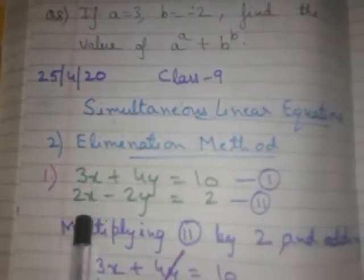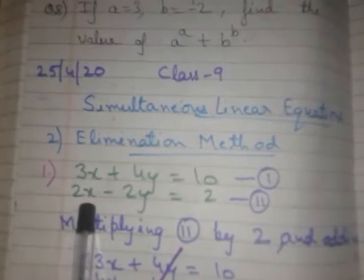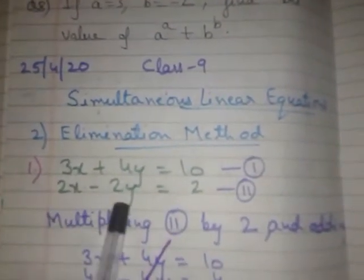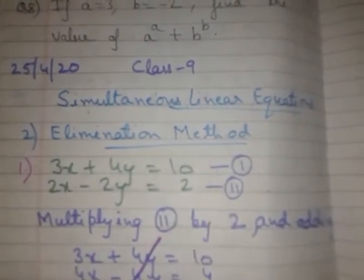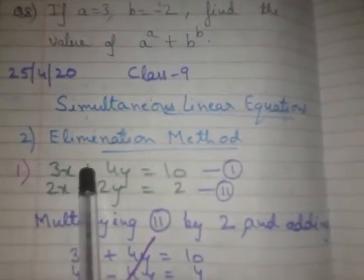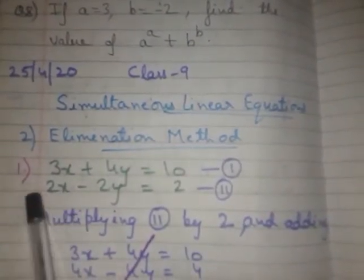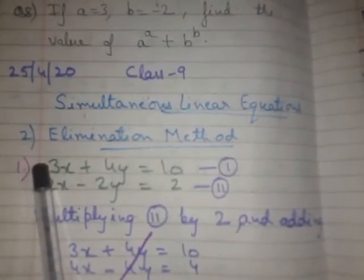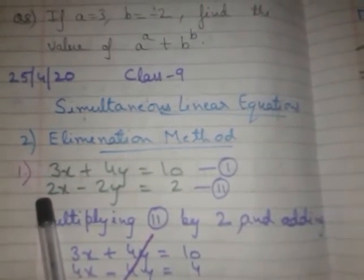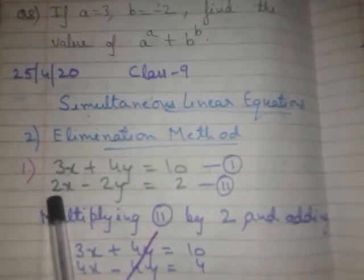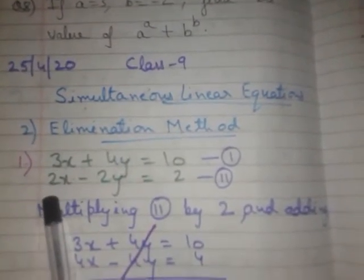Suppose our equations are these two: 3x plus 4y is equal to 10, and 2x minus 2y is equal to 2. Now, we can see here that if we want to eliminate x, we will have to multiply the first equation by 2 and the second equation by 3. Only then will we be able to eliminate x.